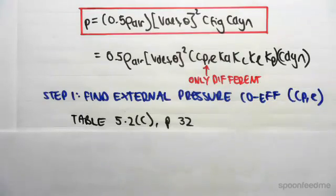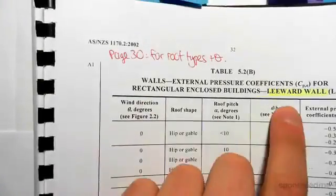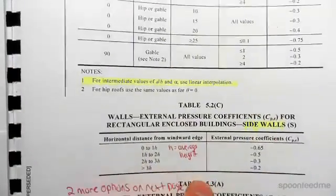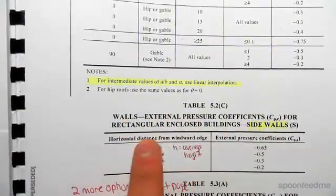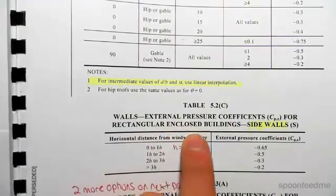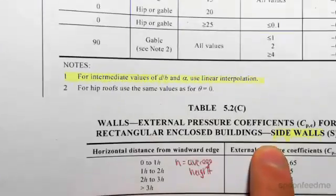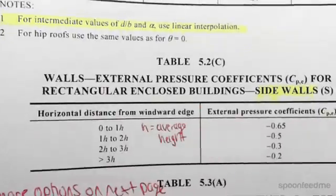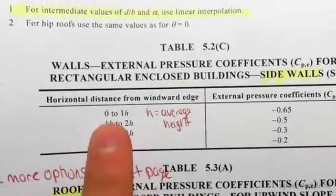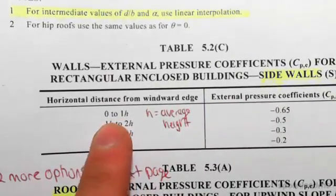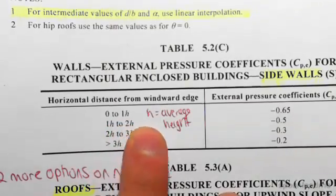We go to Table 5.2c on page 32, which is the table just below the leeward wall table. This gives us the external pressure coefficient Cpe for rectangular enclosed buildings — specifically for sidewalls. You'll notice there's a range of values, where h is the average height.